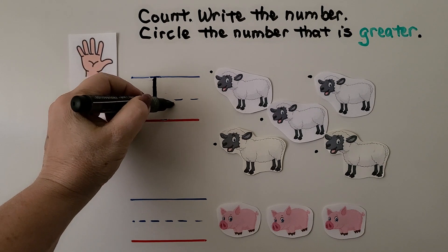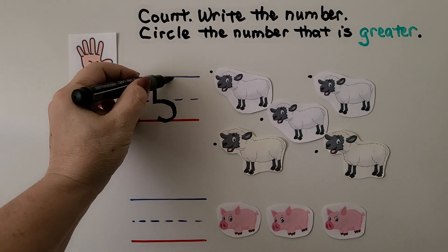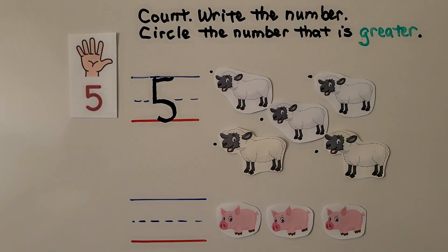We come down and around and we put on the top. Here we have 1, 2, 3 pigs. We can write the number 3.